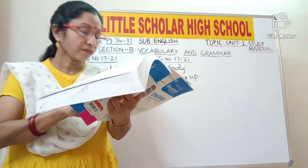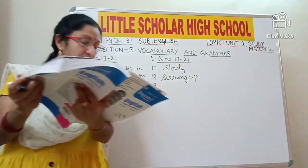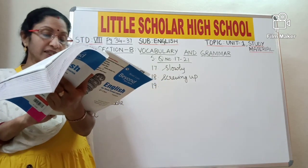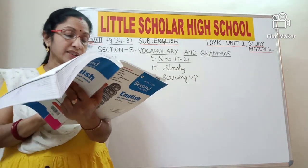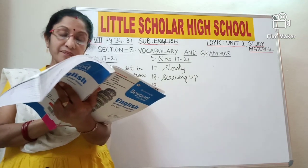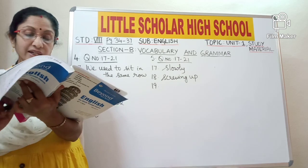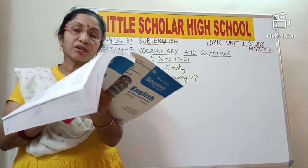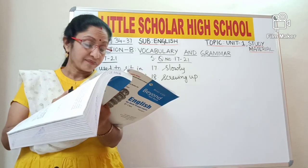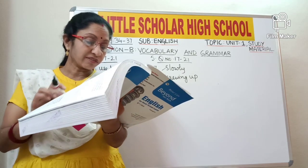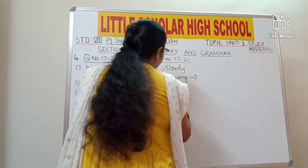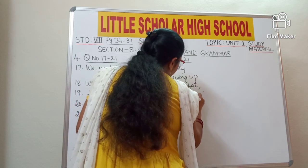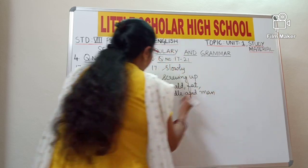Question number 19: 'She saw a bald, fat, middle-aged man walking in through the gate.' Pick out the noun phrase from the underlined part. 'Man' is the noun here. The words 'bald, fat, middle-aged' are adjectives describing the man — together they form a noun phrase. So the noun phrase is 'a bald, fat, middle-aged man'.